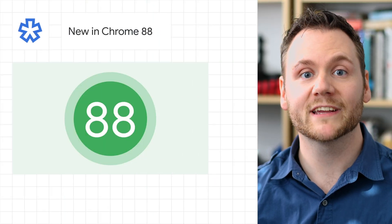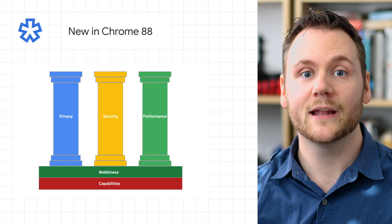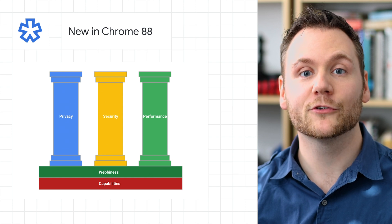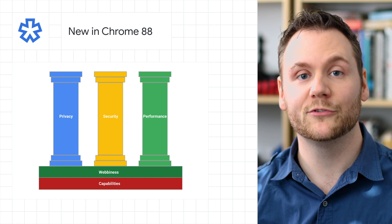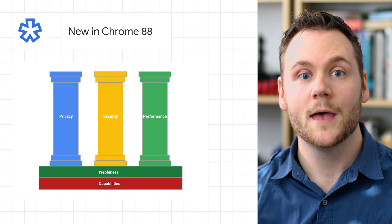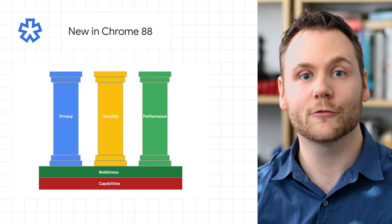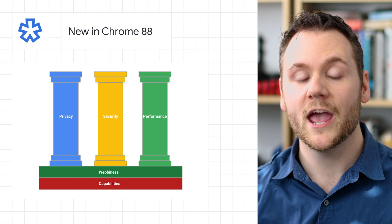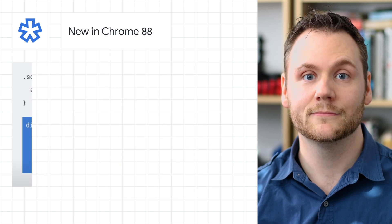Chrome 88 is rolling out to stable. Version 88 now supports extensions built with Manifest Version 3, and you can upload them to the Chrome Web Store. Manifest Version 3 is a new extension platform that makes Chrome extensions more secure, performant, and privacy-respecting by default.